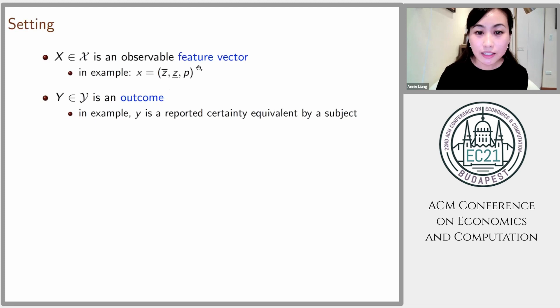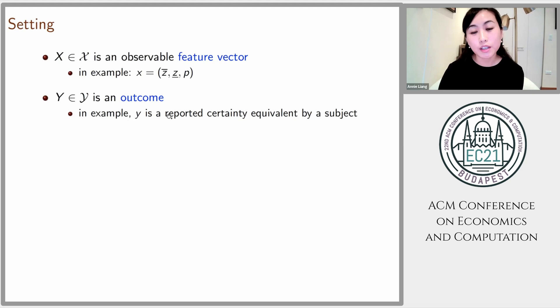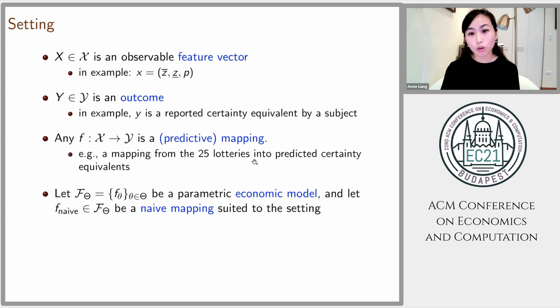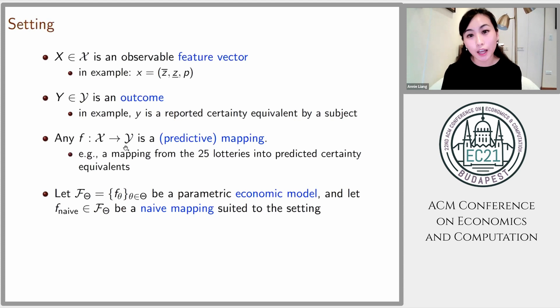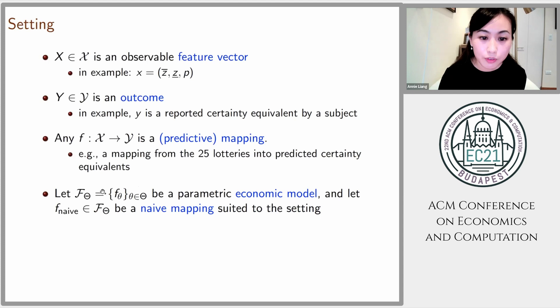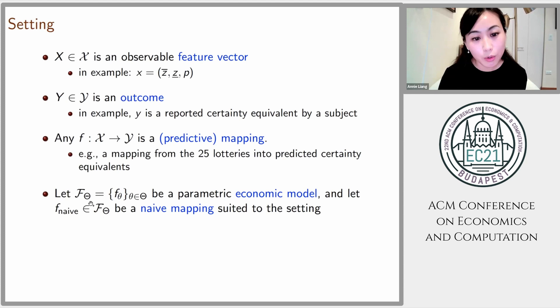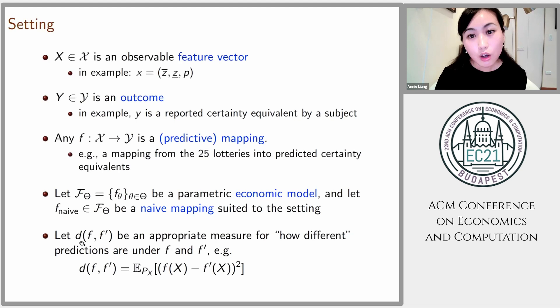Here's our general setting. The analyst has access to feature vectors — in the previous example, simply the description of the binary lottery. There's some outcome you want to predict; in the previous example, that was the reported certainty equivalent by a given subject. A predictive mapping is any mapping taking these feature vectors into predictions for this outcome. We're interested in parametric economic models, which consist of many different such mappings unified in the sense that they obey some common structure. We also take as a benchmark a naive mapping, which is some degenerate case of this economic model. Finally, another primitive is a function d, telling us how far apart any two mappings f and f-prime are.